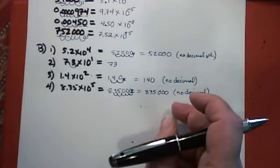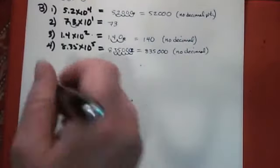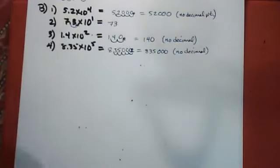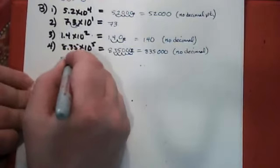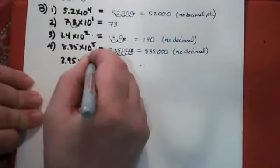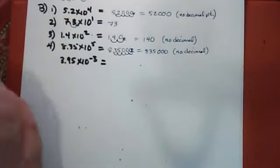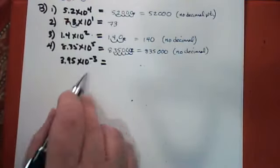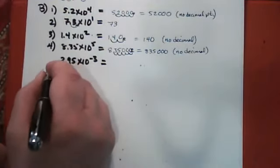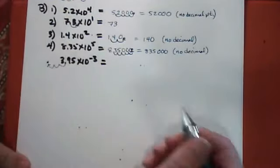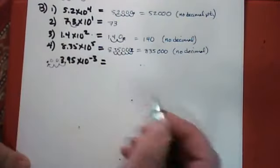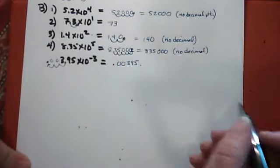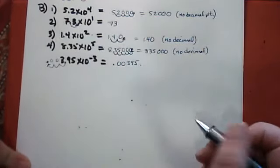For negative powers of 10, you do much the same thing except in the opposite direction. The example given is 3.95×10⁻³. This means you move the decimal point three spaces in the direction that makes the number smaller, which is to the left. The decimal point ends up there and you fill in the empty spaces with zeros. So it's 0.00395, and that is the same number in decimal form.